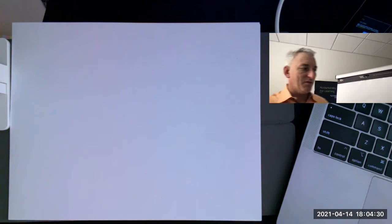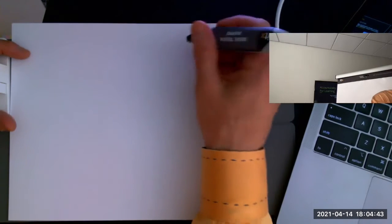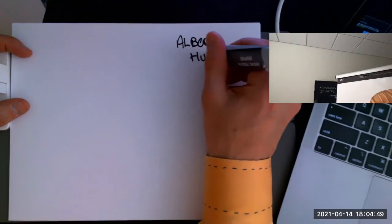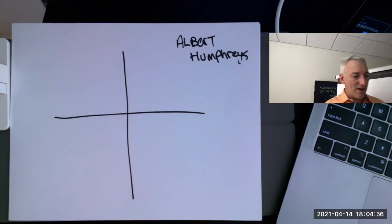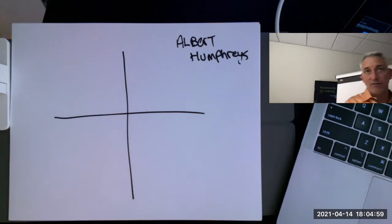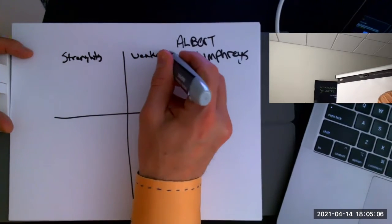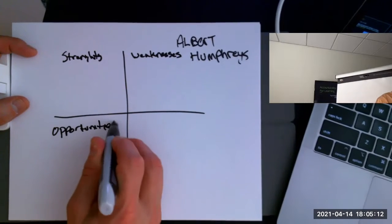Another one you commonly hear about in terms of figuring out how to compete — I love to talk about this one because I actually use an exercise based on it in all of my workshops for clients. This model is from Albert Humphrey. What he did was discover a simple two-by-two matrix called the SWOT matrix: Strengths, Weaknesses, Opportunities, and Threats.